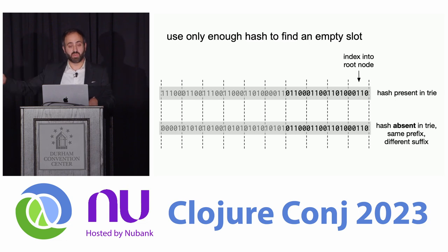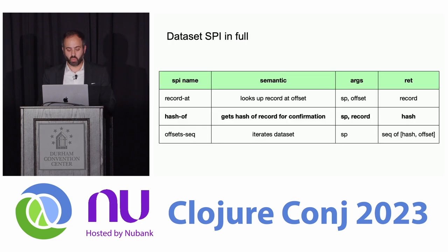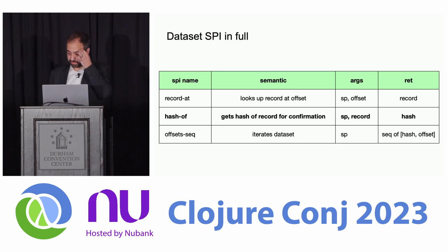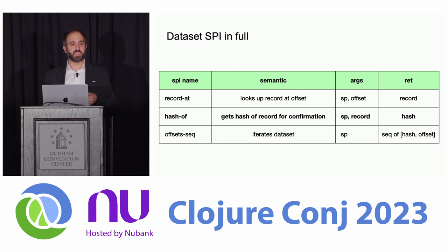The hash of the record that you found was the hash that you were looking for. So there's one more method in this data set abstraction: hash-of, used for confirmation. Given a record, give me its hash. All three of these things are essential to be correct. This hash-of method — there's a similar confirmation process inside Clojure Hash Maps. Because they're organized by hash, not organized by key, you have to confirm that the thing you found had the same key that you were looking for.